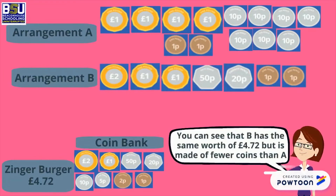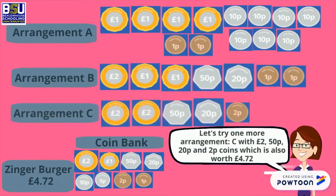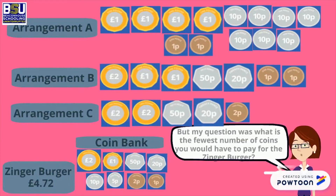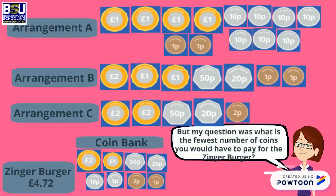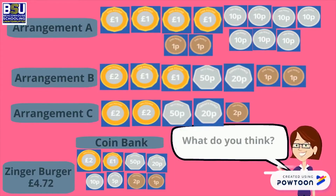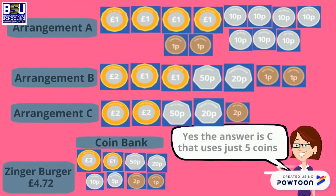Let's try one more — arrangement C, with two 1-pound coins, one 50-pence, one 20-pence, and one 2-pence coin. But my question was: what is the fewest number of coins you would have to pay for the zinger burger? Yes, the answer is C — that uses just five coins!